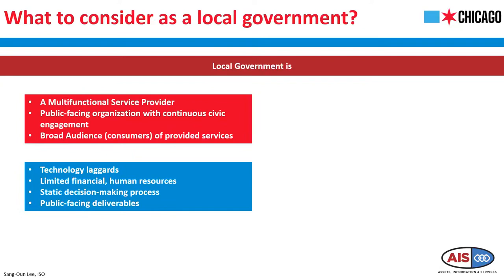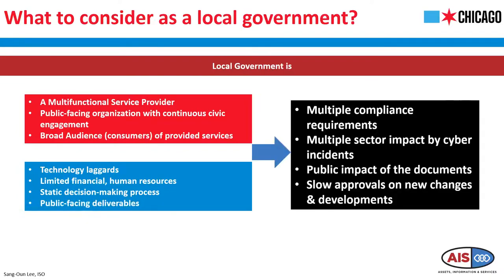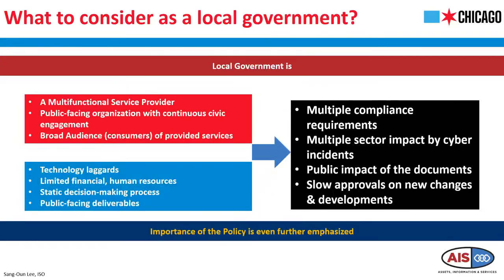Our security team is relatively very small compared to the size of the organization, and I believe this is not only the case of Chicago, because Chicago is one of the largest cities in the United States. Third is about our static decision-making process for public-grade documents. We need to go through mayoral approval, and once something is approved and implemented, our deliverables are public-facing and open to the public. This means multifunction results in multiple compliance requirements, larger impact from a cyber incident, and public influence of our documents.